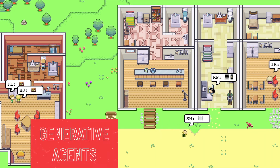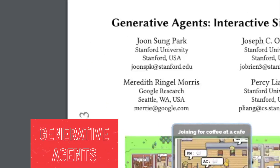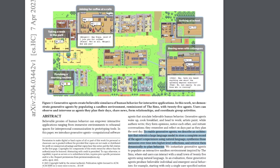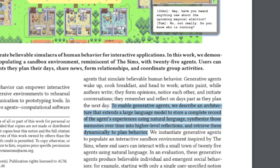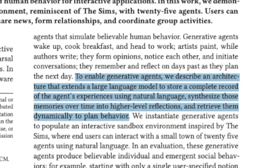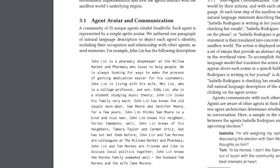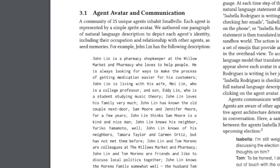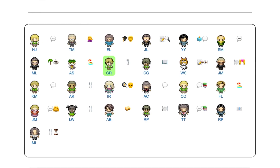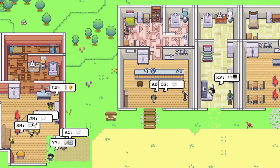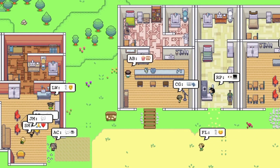Moving on within this topic, there's this fascinating game that was made using generative agents. These agents are like virtual characters with their own memories, just like humans. They can interact with each other and learn from their experiences. The creators of the game gave each AI character some initial memories, kind of like little stories they remember. Then they put 25 of these characters in a sandbox environment similar to that of Sims.